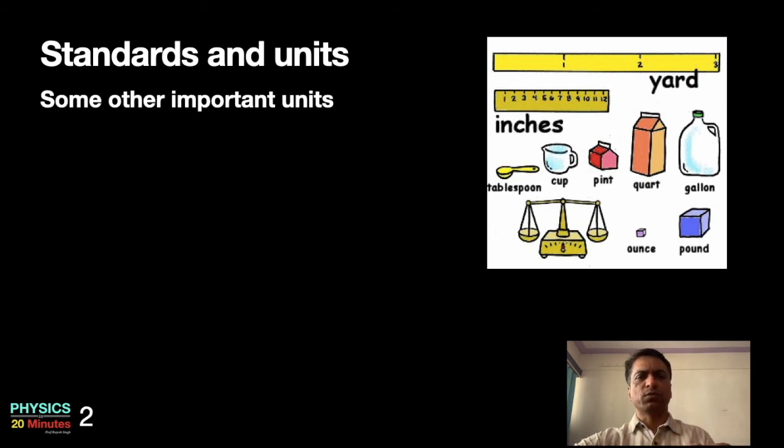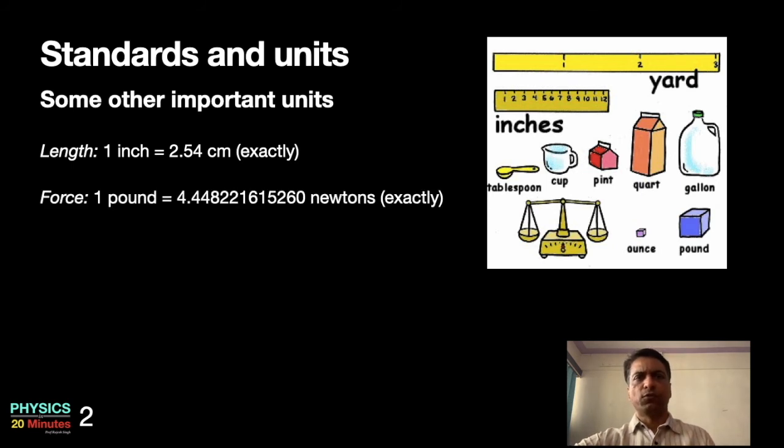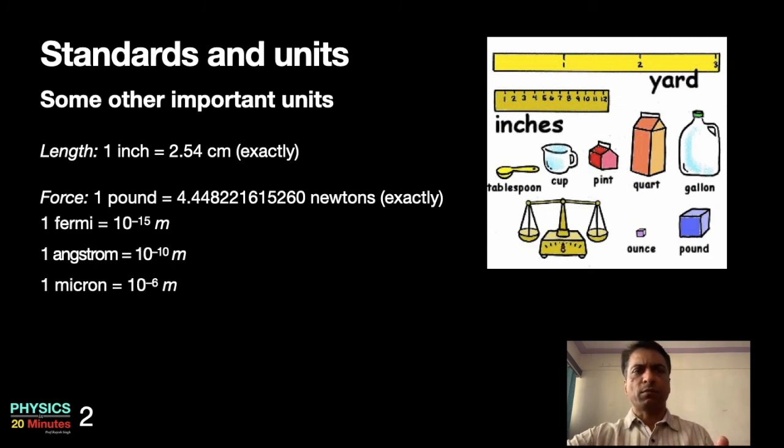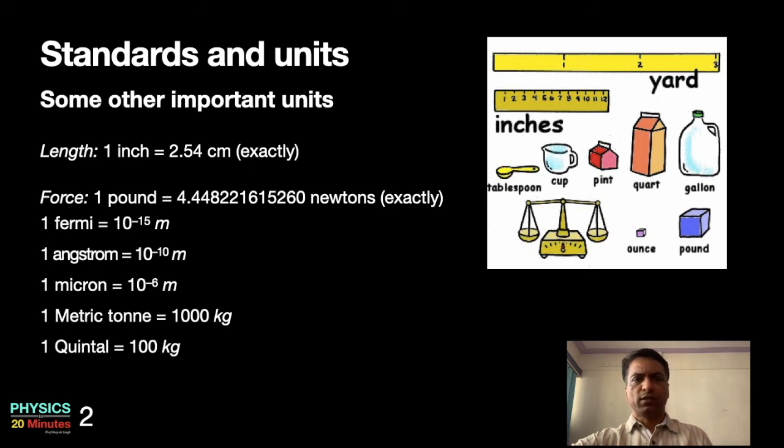But apart from these, in several parts of the world you will find some other terminologies or other standards as well. Let us have a look at them. One inch - it's a very common unit of measurement. Most school scale compass boxes have the ruler, 6 inch ruler or 12 inch rulers. One inch is 2.54 centimeter. One pound is 4.448221615260 newton. One Fermi is 10 power minus 15, used to measure the length at nuclear levels. One micron: 10 power minus 6 meter. One metric ton is 1000 kg. One quintal is 100 kg. One atomic mass unit is 1.67 times 10 power minus 27 kg.